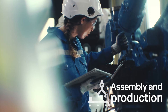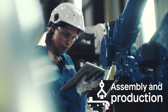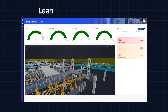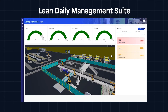Assembly and production need constant situational awareness. The product view 360 template correlates all the data sets from your disparate systems. The lean daily management suite creates a 3D model of your shop floor so you can monitor the status of all of your work centers.